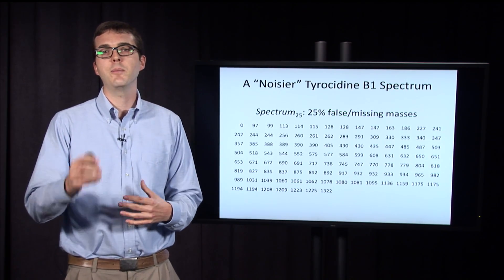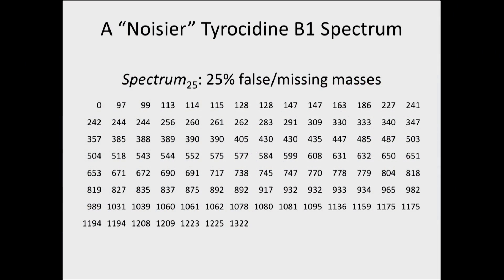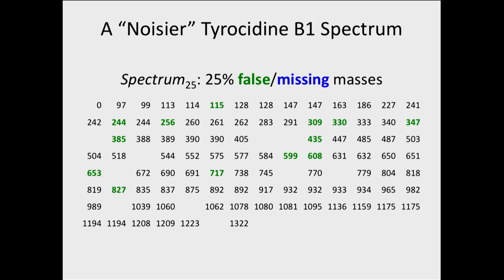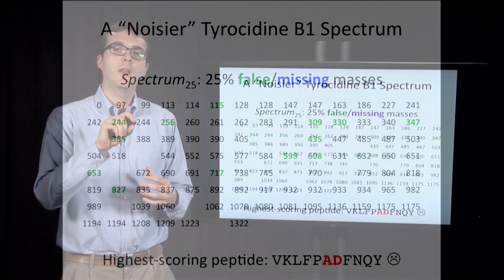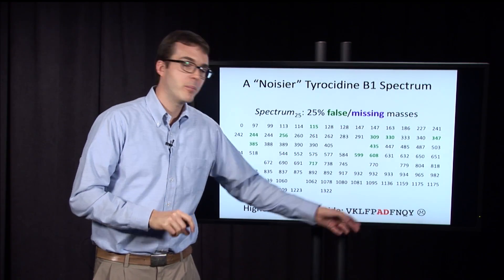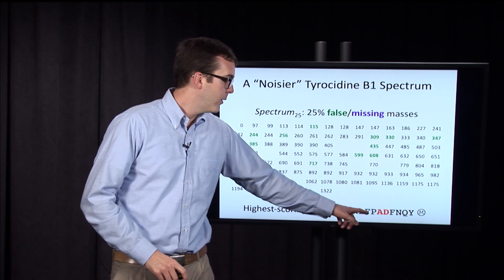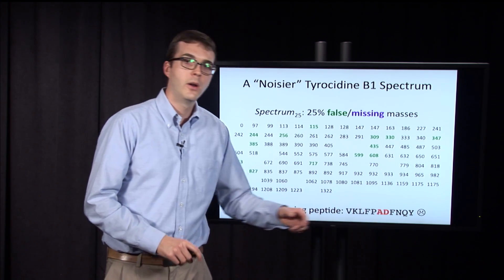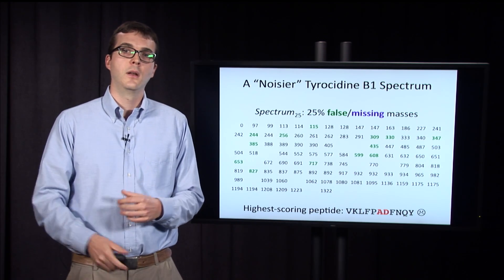Maybe 10% false and missing masses was a bit optimistic. So let's introduce a slightly noisier tyrosidine B1 spectrum with 25% false and missing masses. I'll show you where the false and missing masses are so you can believe me, even though we won't know this in practice. When we run the same algorithm on this noisier spectrum, the peptide it produces is actually not tyrosidine B1 — it's close, but one correct amino acid has been replaced with an AD. So in this case, we wouldn't be able to reconstruct the correct peptide.